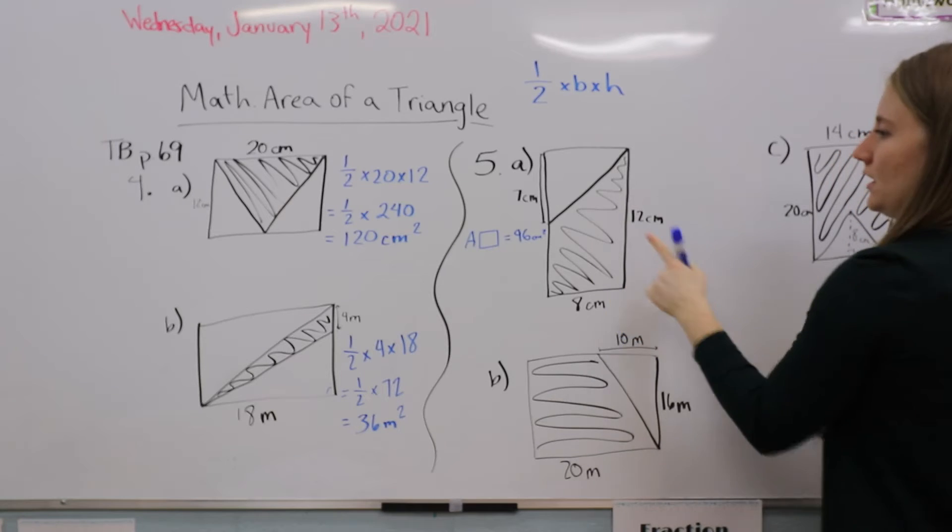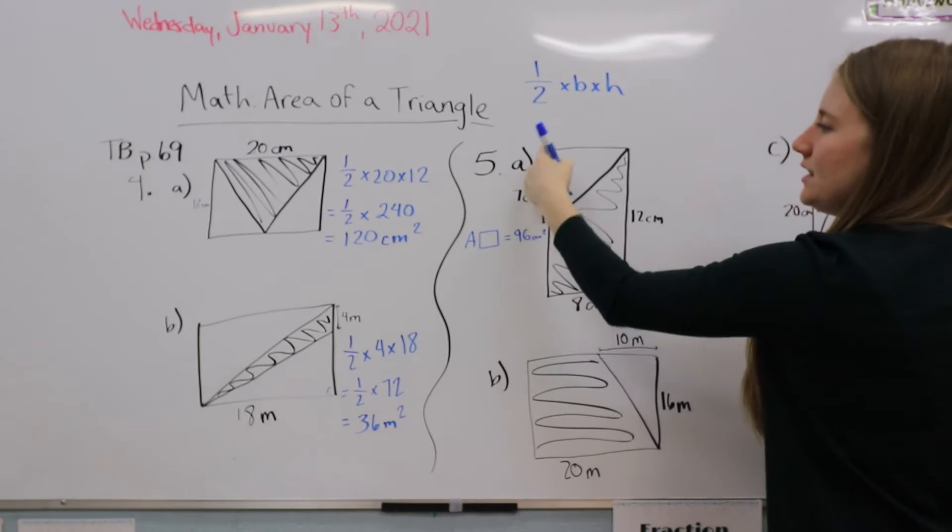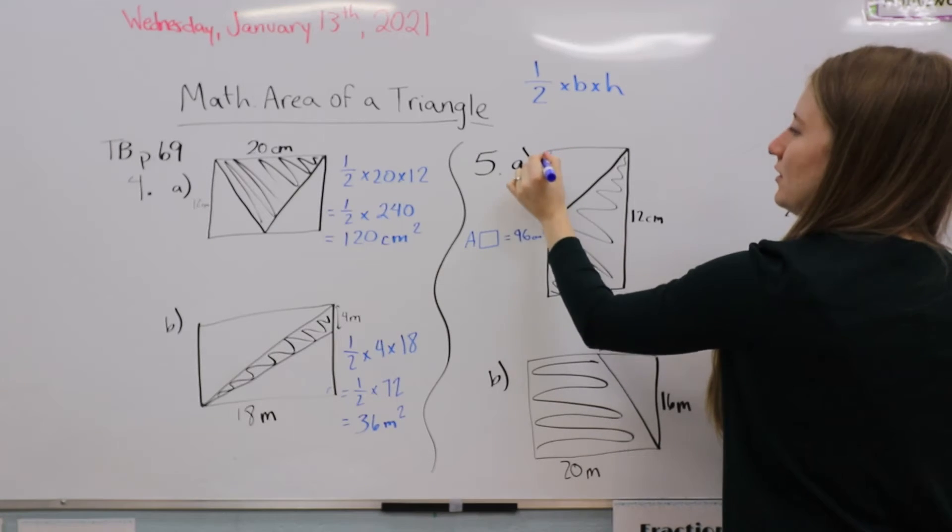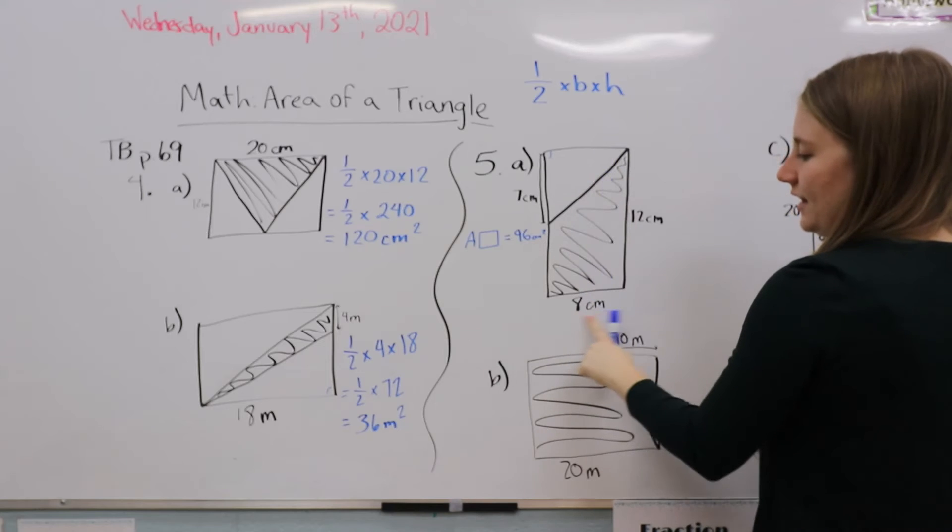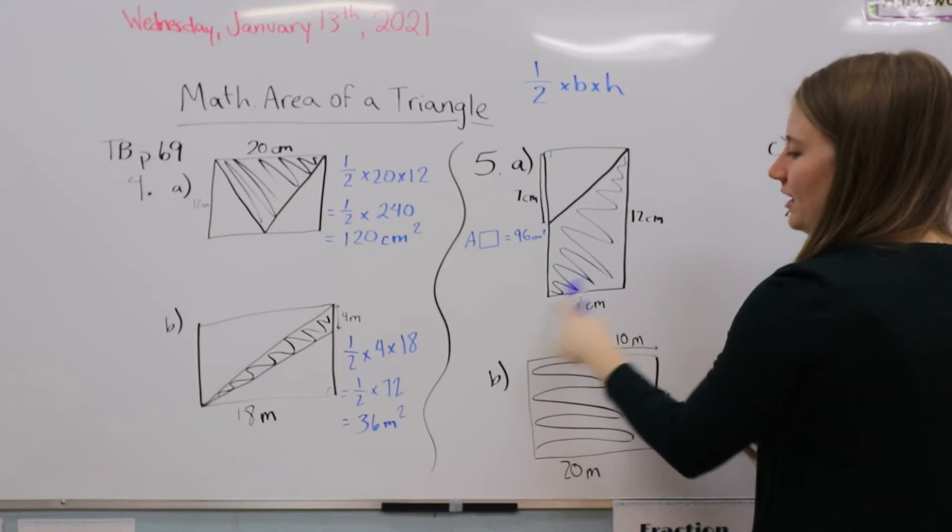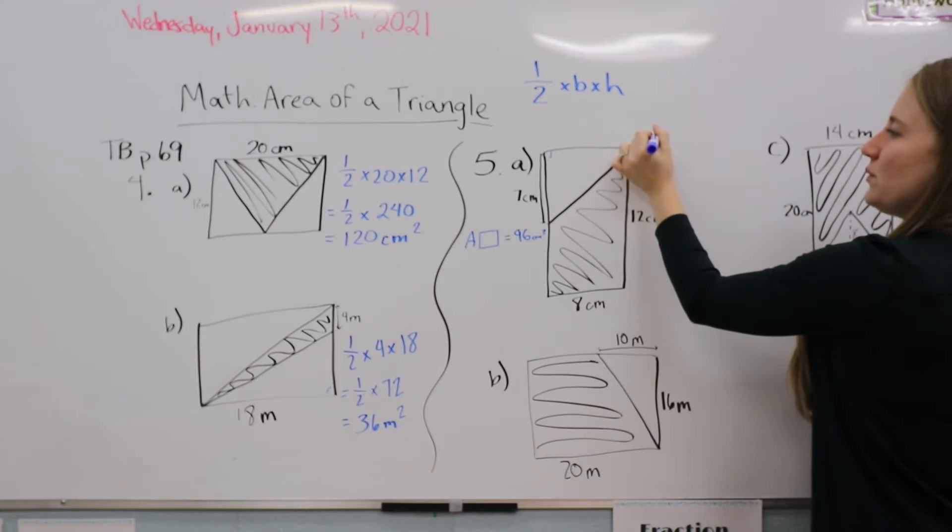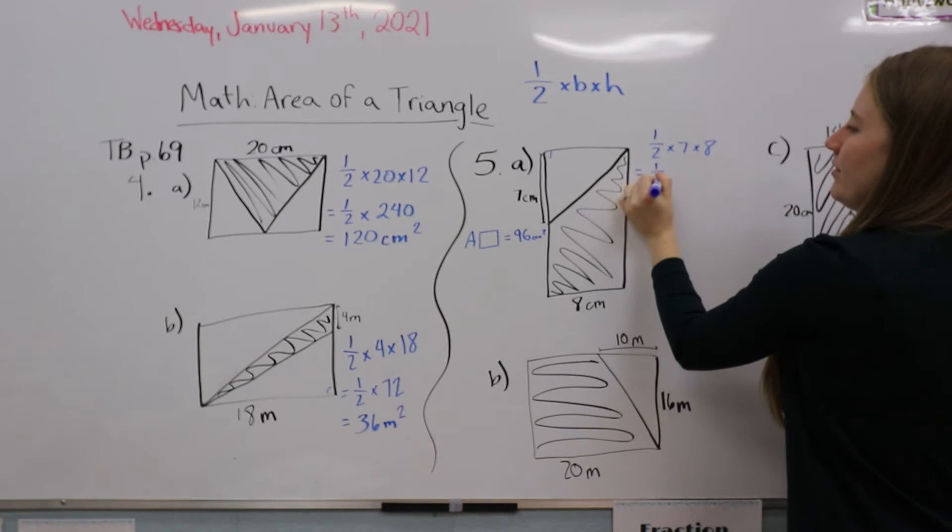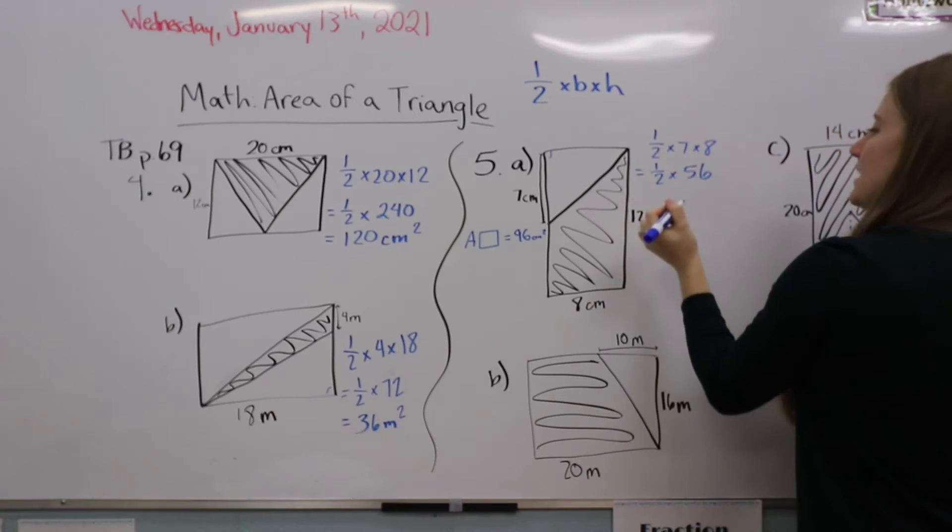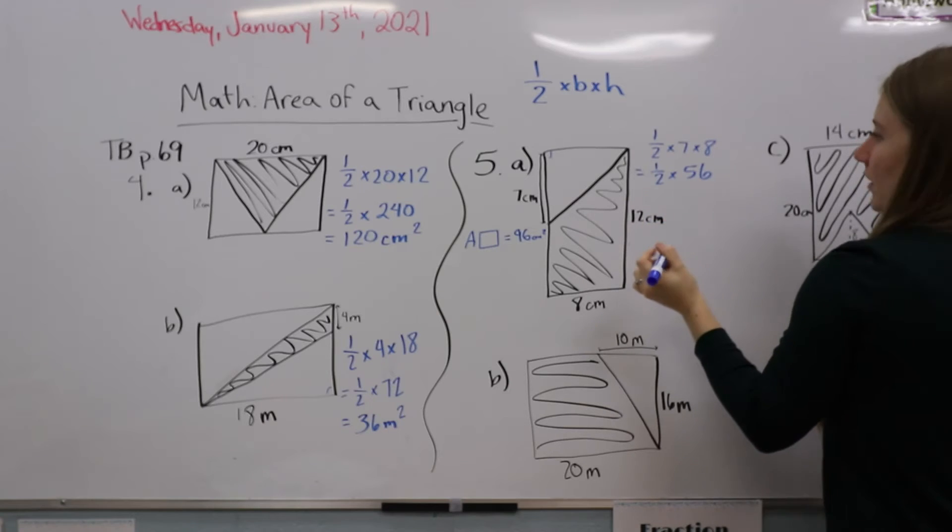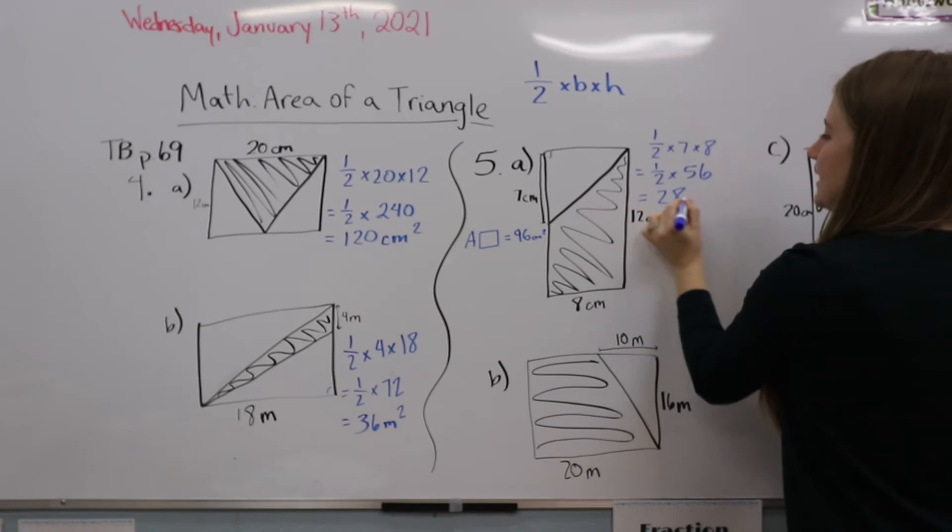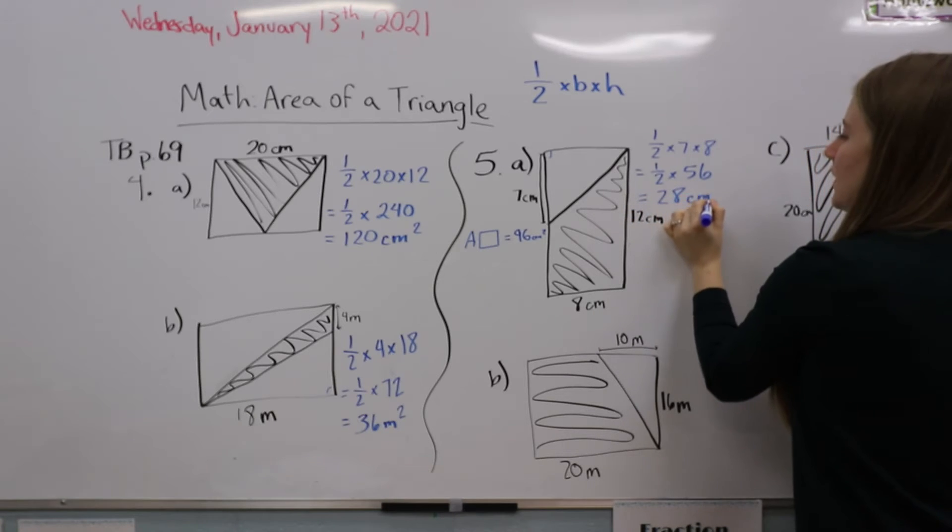Now let's deal with the triangle so we can find the difference. It tells us that this length is 7 centimeters, and we see that this is our little right angle. We're going to use this as our height because we know that that's the same on both ends. That means we're working with half times 7 times 8, which equals half times 56, which equals 28 centimeters squared.